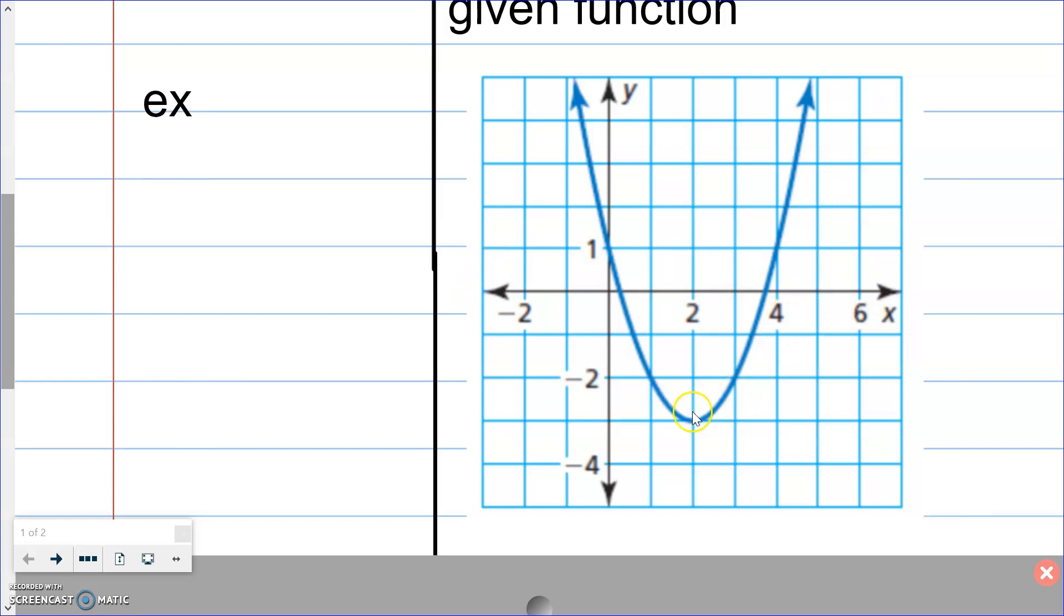On our y's however it keeps on going up and up and it never stops. However it does stop right here at our vertex, our lowest point, and so this is the lowest y that we use. We don't use any of the y's down here. So how do we write that?